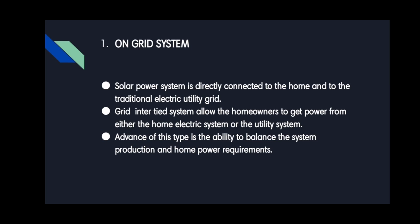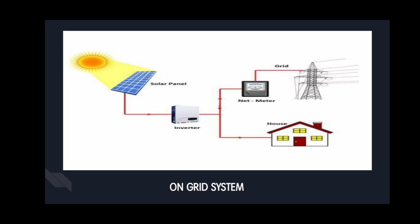Solar panels convert solar energy into DC current. An inverter converts DC current to AC current. When the grid system is producing more power than the home is consuming, the excess can be stored in a net meter.